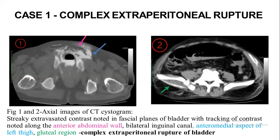Case 1 is a complex extraperitoneal rupture. Images 1 and 2 are axial images of CT cystograms showing extravasated contrast noted in fascial planes of the bladder, with tracking of contrast noted along the anterior abdominal wall, bilateral inguinal canal, and anteromedial aspect of left thigh and gluteal region, indicating complex extraperitoneal rupture of the bladder.